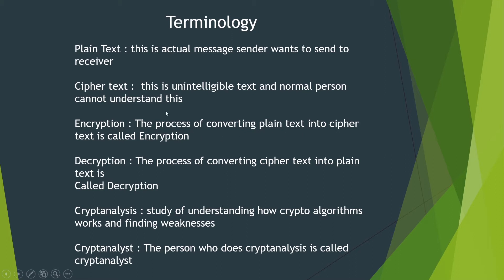The process of converting plain text into cipher text is called encryption — that is the actual process being done on the plain text. After encryption, we get the cipher text. The process of converting cipher text back into plain text is called decryption, which the receiver performs. So encryption is performed at the sender side and decryption at the receiver side.